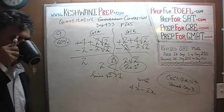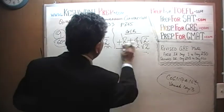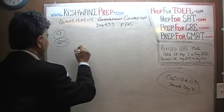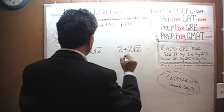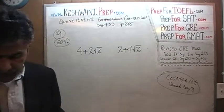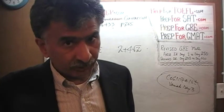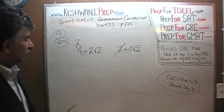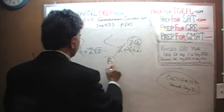Let me do problem 9 one more time in real time, without baby steps. 4 + 2√2 versus 2 + 4√2. Subtract 2 from both sides — 4 becomes 2. Subtract 2√2 from both sides — 2√2 goes away and we get 2√2 remaining in column B. 2√2 is more than 2. Answer is B. Done.